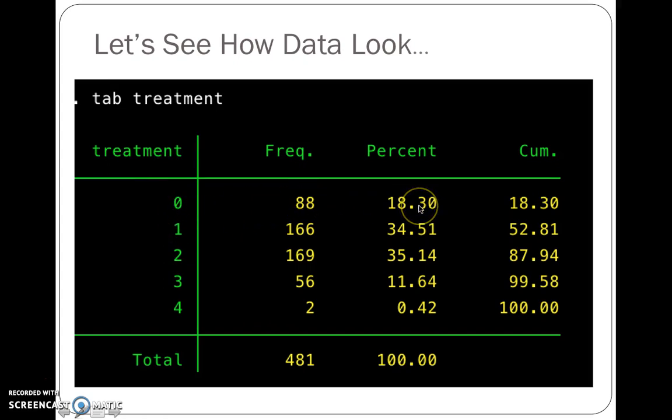So we had 18% of the people had no treatment, 34.5% said one method, 35% said two methods, 11.64% said three methods. And then there were two individuals, 0.42%, that said that they used four methods. So maybe that's a really small number, and it's not going to give us a lot of statistical power to work with at all. So we might consider doing something with this.